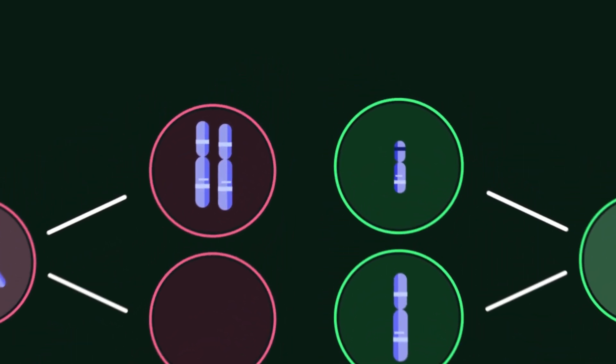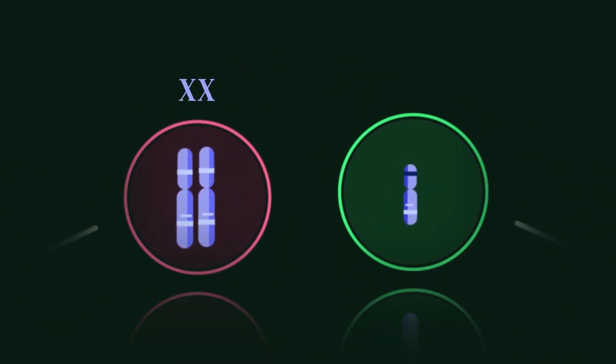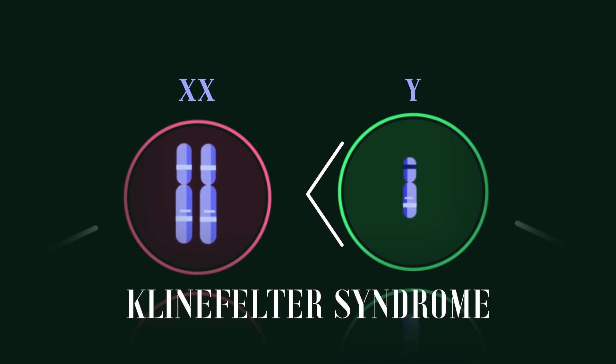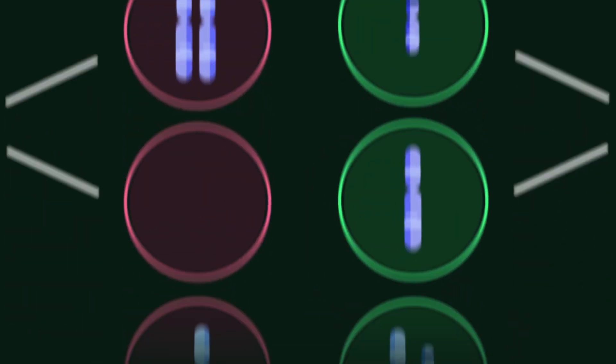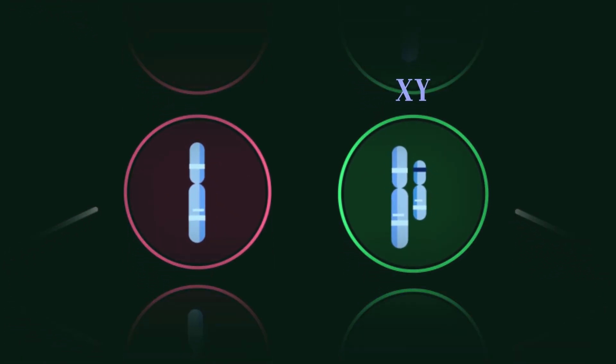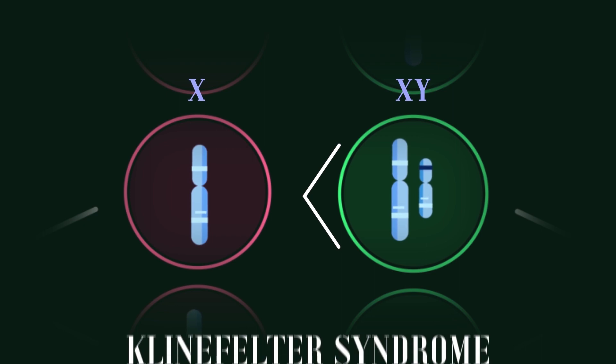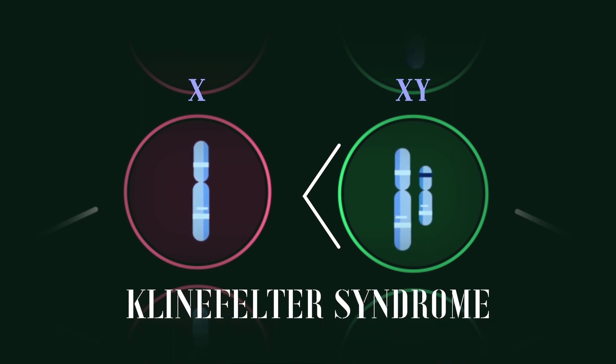If an egg with an extra X chromosome (XX) is fertilized by a sperm cell with a Y chromosome, the fetus will have Klinefelter syndrome. And if a sperm with both an X and a Y chromosome fertilizes an egg with an X chromosome, the fetus will also have Klinefelter syndrome.